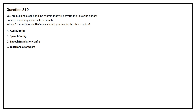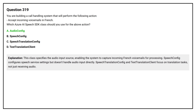Question number 319. You are building a call handling system that will perform the following action: accept incoming voicemails in French. Which Azure AI Speech SDK class should you use? Option A: Audio Config. Option B: Speech Config. Option C: Speech Translation Config. Option D: Text Translation Client. The correct answer is Option A: Audio Config. This class specifies the audio input source, enabling the system to capture incoming French voicemail for processing.